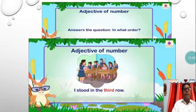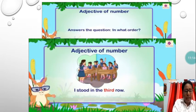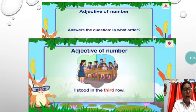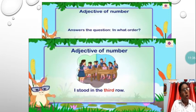Adjective of number can also answer the question: in what order? As I explained, cardinal numbers like six, seven, eight, nine are cardinal numbers. And as you can see in the example: I stood in the third row — here third is an ordinal number.